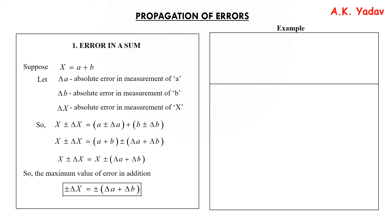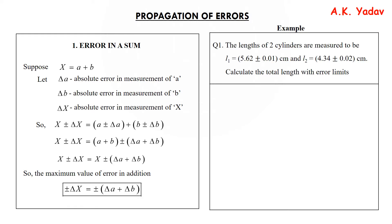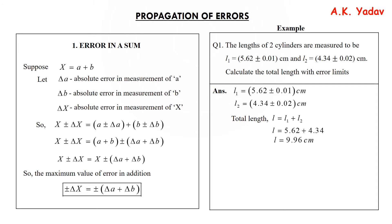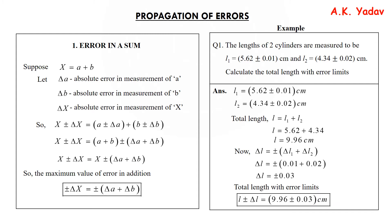Let's take an example. The length of two cylinders is measured as l₁ = 5.62 ± 0.01 cm and l₂ = 4.34 ± 0.02 cm. We calculate the total length: l = l₁ + l₂ = 5.62 + 4.34 = 9.96 cm. For the error: δl = ±(δl₁ + δl₂) = ±(0.01 + 0.02) = ±0.03 cm. So the total length with error limits is 9.96 ± 0.03 cm.